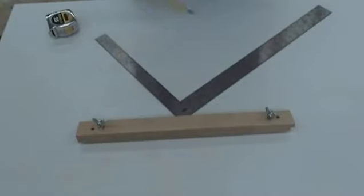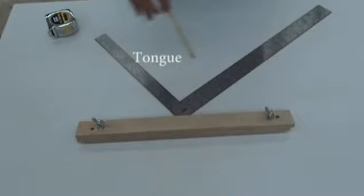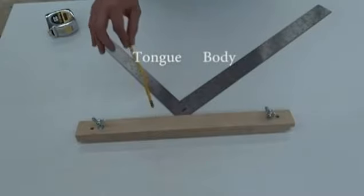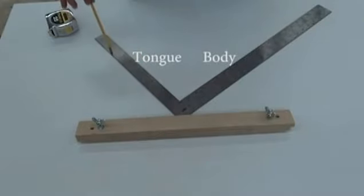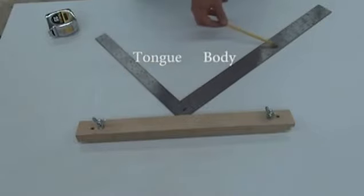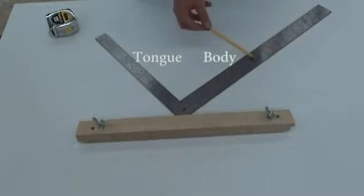So here's our framing square. The framing square is made up of the tongue and the body, and when we set it up in our stair layout jig, we're going to use the tongue to lay out our rise, our unit rise, and we'll use the body as the component of our unit run.